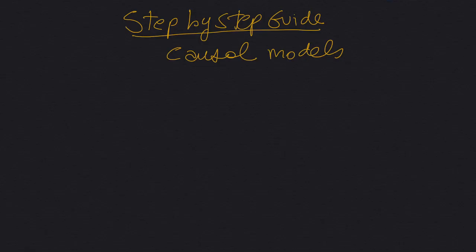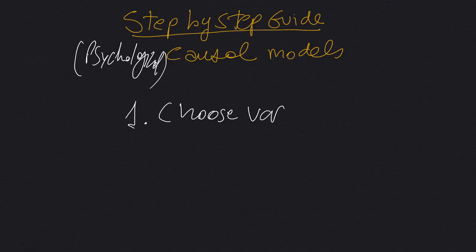This is the step-by-step guide for causal models or psychological causal models. So the first step that you need to go through in order to design a causal model is to choose the appropriate variables for the model.